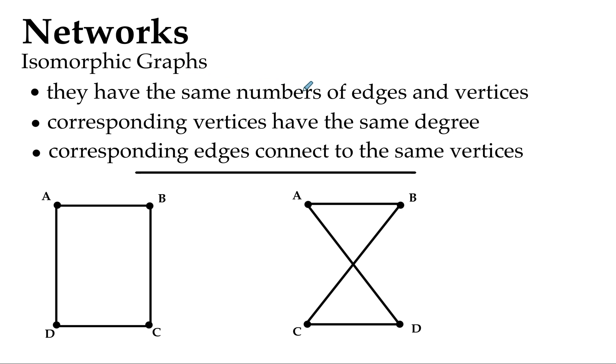Do they have the same numbers of edges and vertices? Here we have one, two, three, four edges. And over here we have one, two, three, four edges. So we've ticked that one off.